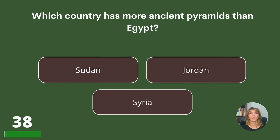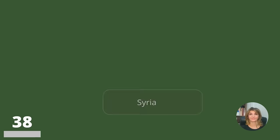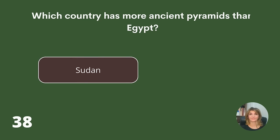Which country has more ancient pyramids than Egypt? Sudan, Jordan, or Syria? Answer: Sudan.